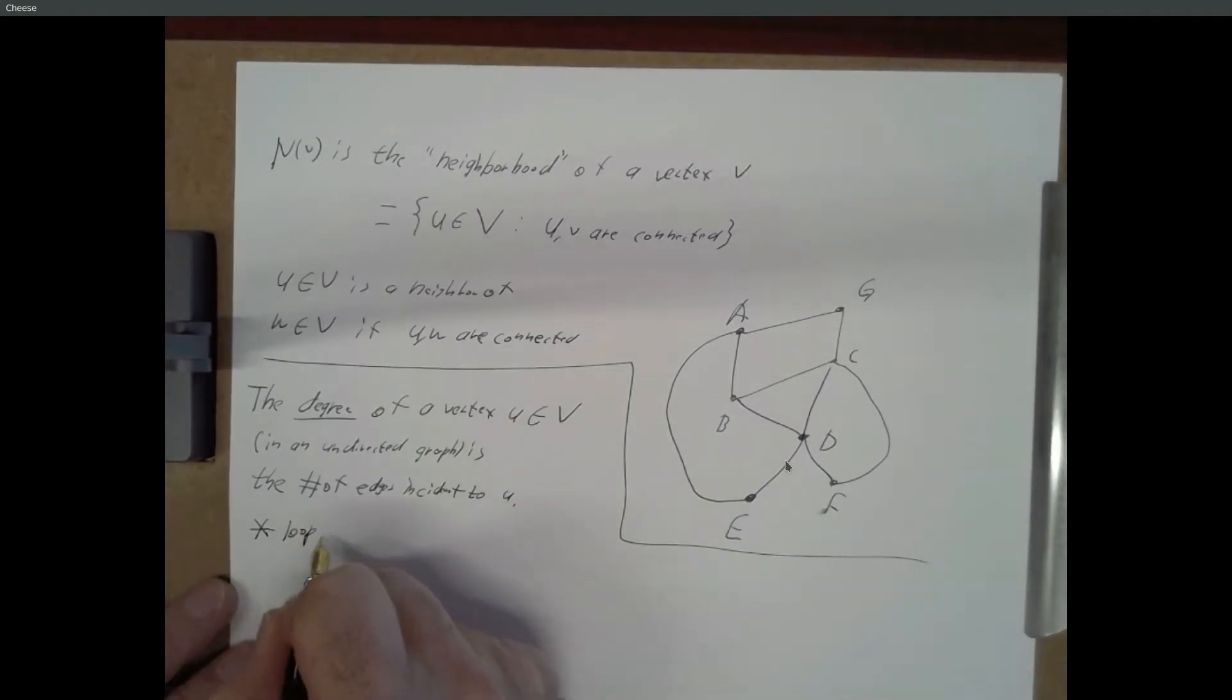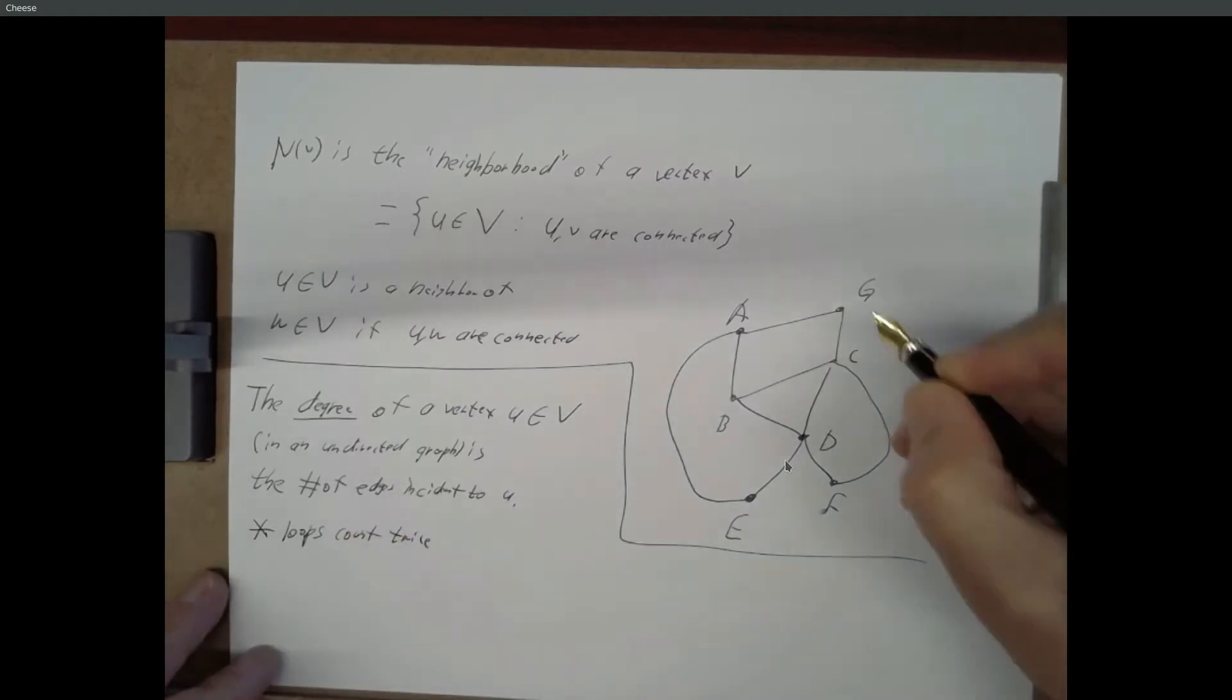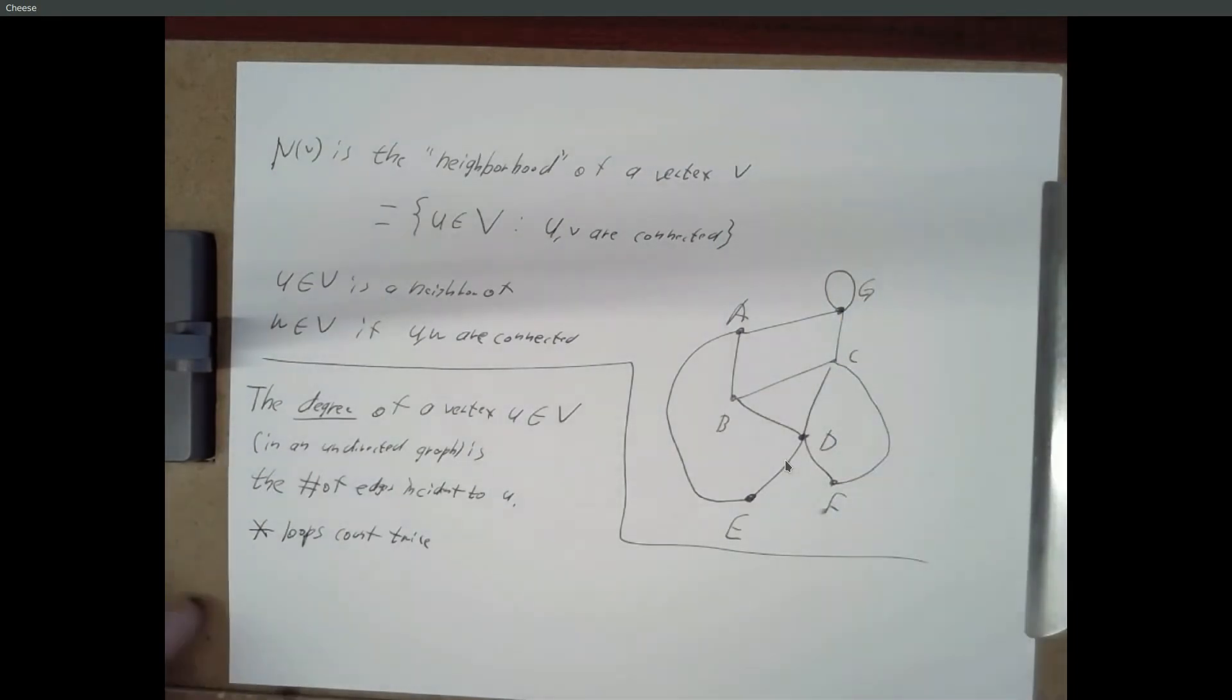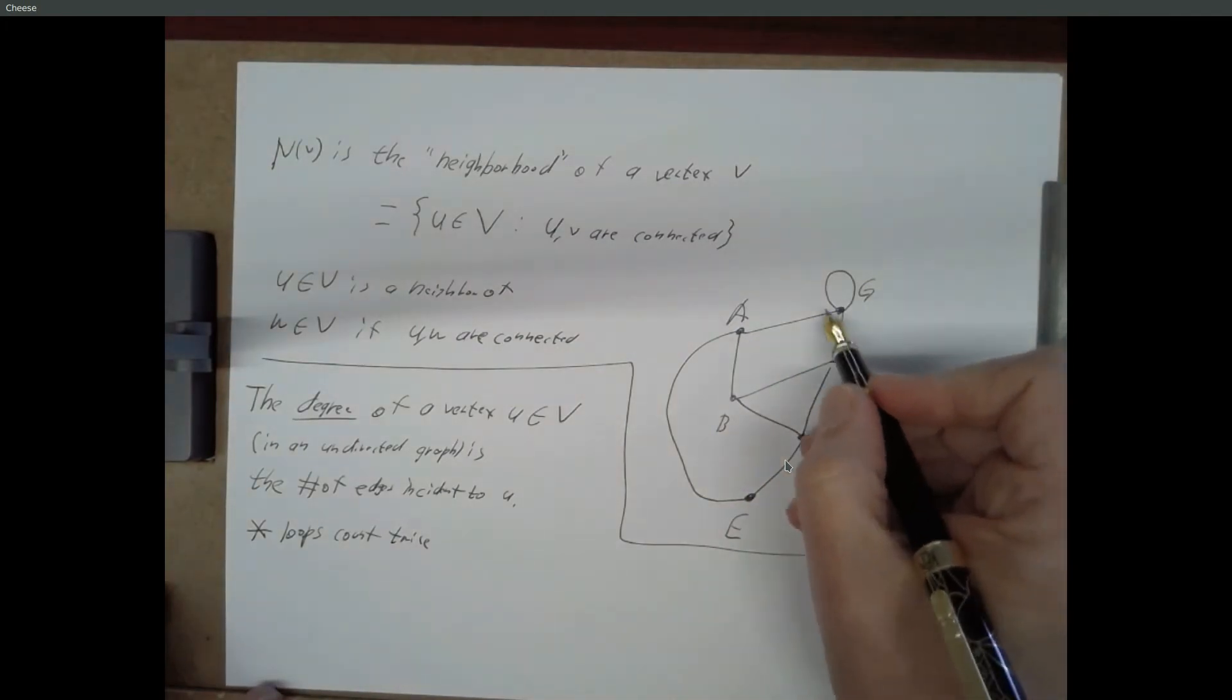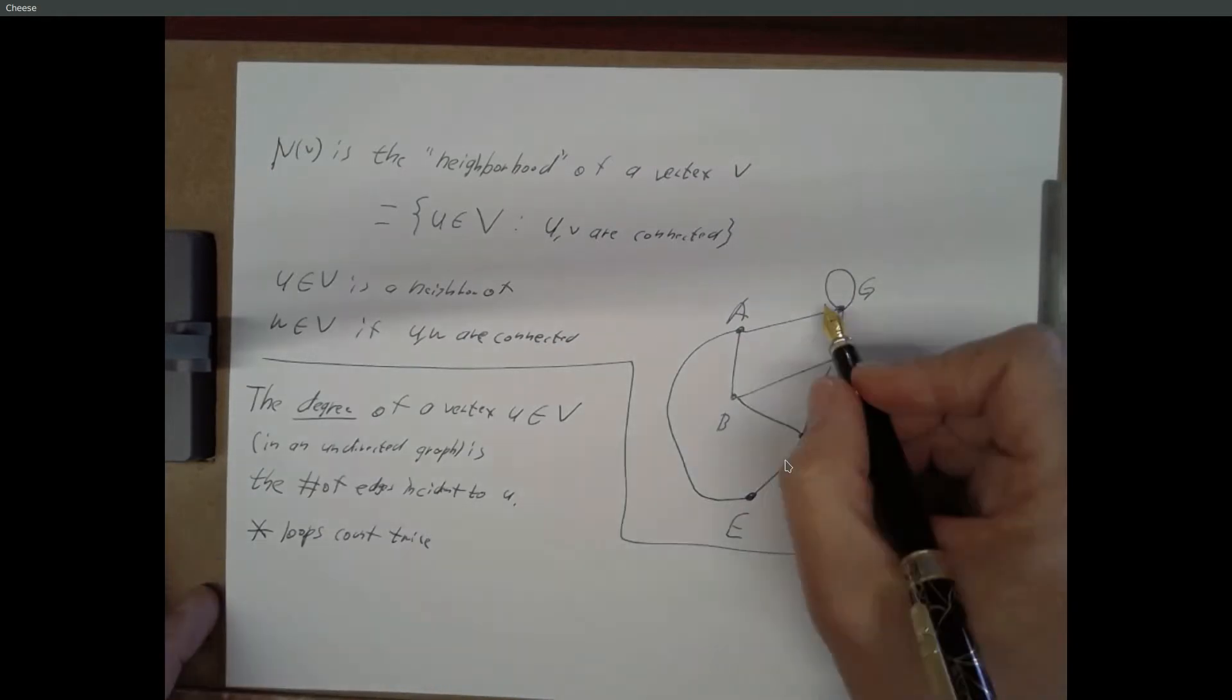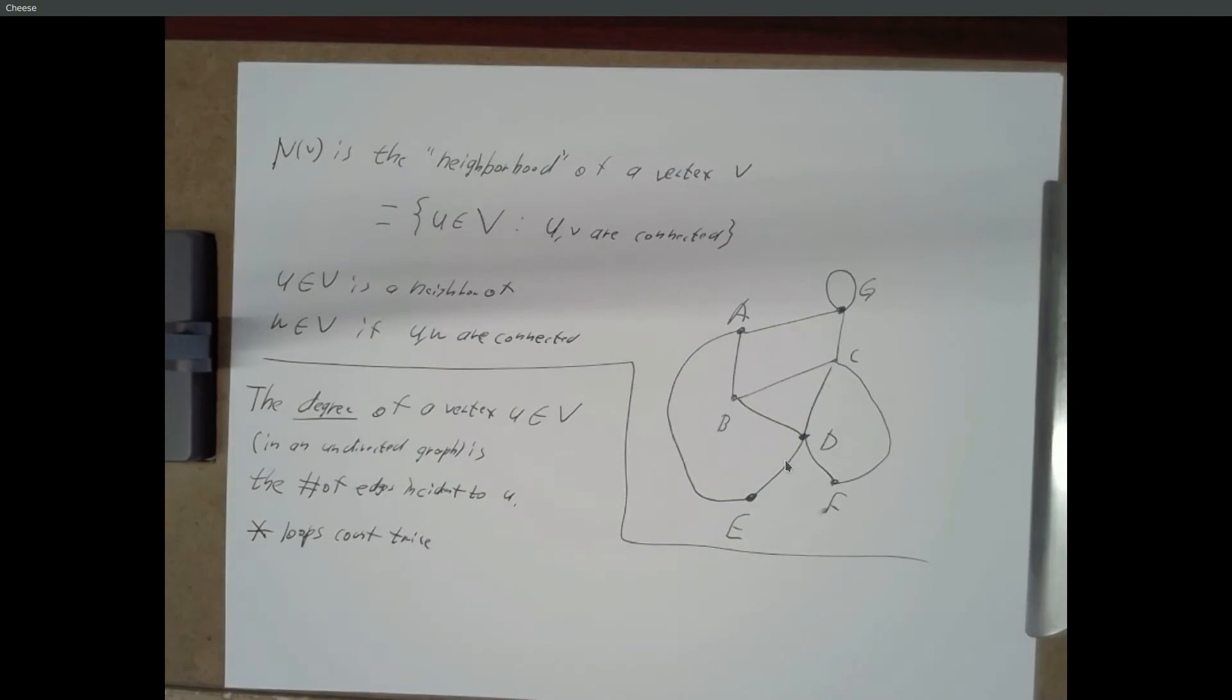So, if I have a loop like this, the degree of G would actually be four. Because we've got one edge, two edge, but the loop we actually count twice. So, it's not really edges, but connections. It's more like connections, yeah. So, the number of things, like touching that vertex.